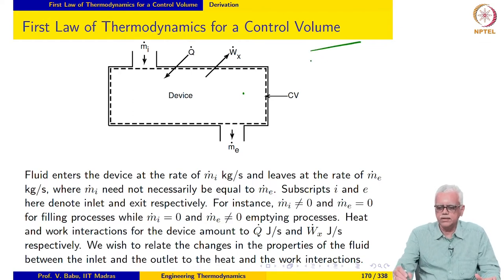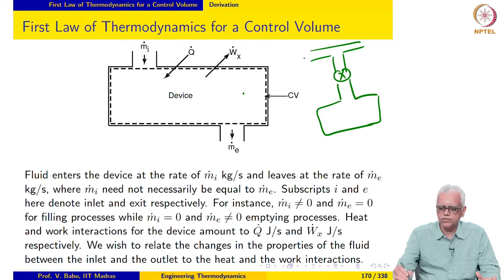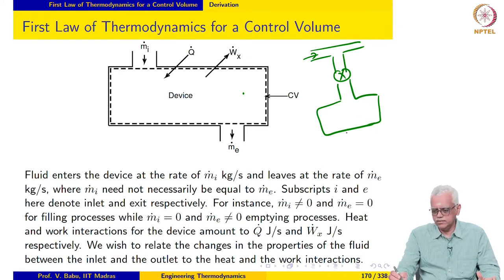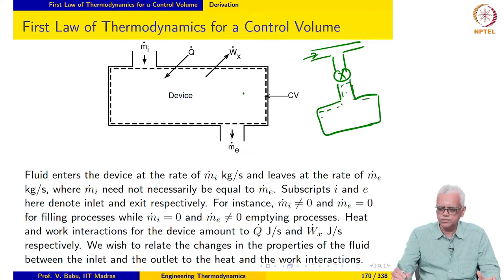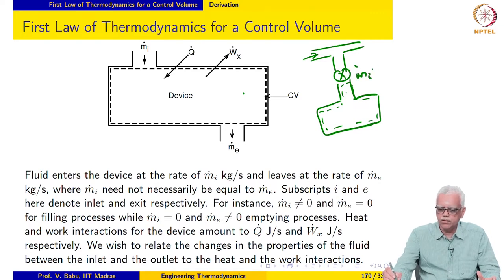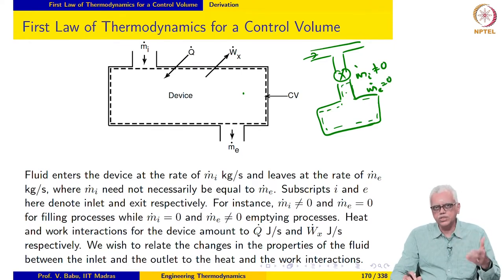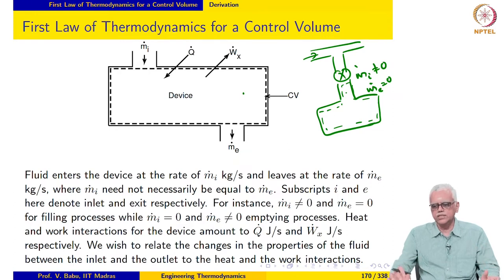For instance, if we are trying to fill a vessel from a tank — an example we have seen before — some mass flows into the vessel but nothing flows out. For this case, ṁᵢ is not 0, but ṁₑ is equal to 0. There will be continuous accumulation of mass in the vessel until we stop the process, and it is also an unsteady process.